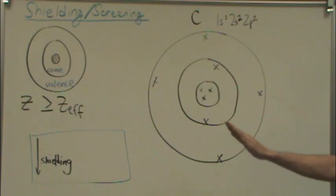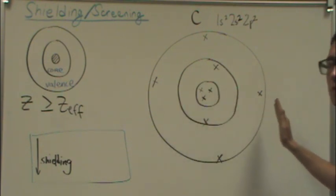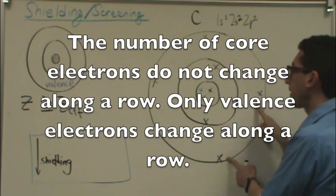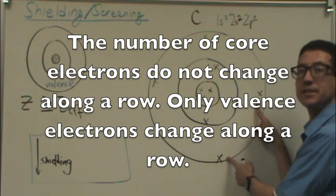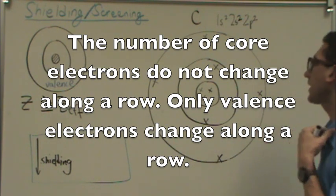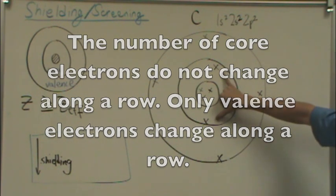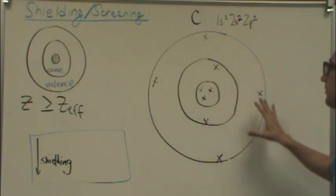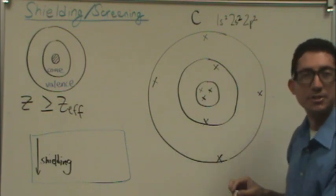So notice what's happening as I start to go to the right on the periodic table. The number of core electrons does not change. But as I go to the right, the number of valence electrons increases. In that case, these two are doing, as you go to the right, a worse and worse job at shielding because there's too many electrons in the valence to shield.